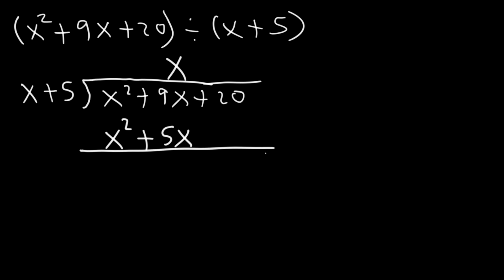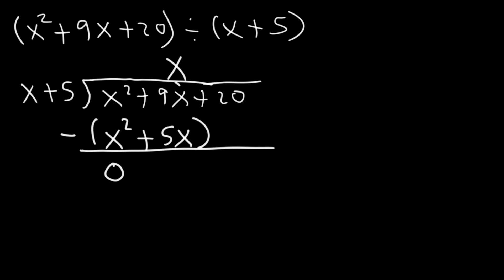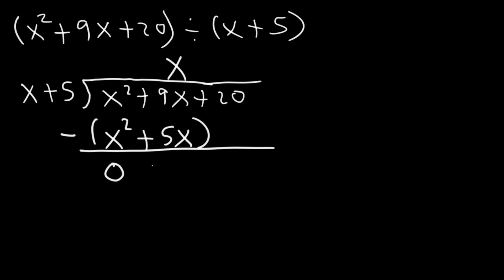Now we need to subtract. We put a negative sign and that negative sign needs to be distributed to x squared and 5x. So we're going to subtract x squared minus x squared, which gives us 0, and then 9x minus 5x is going to be 4x.